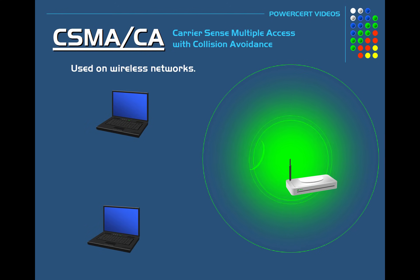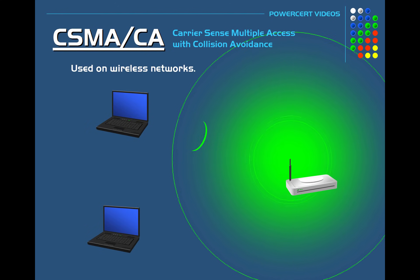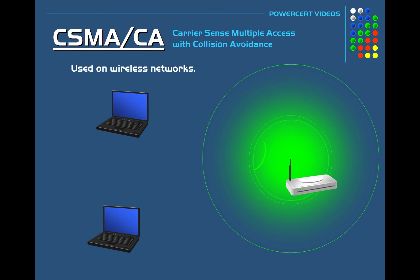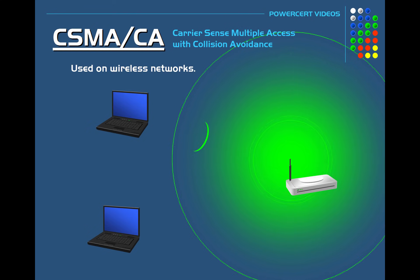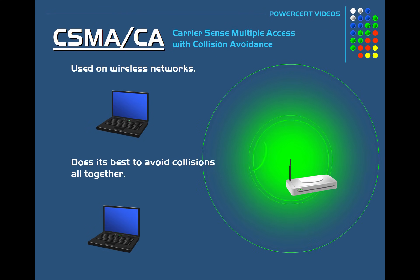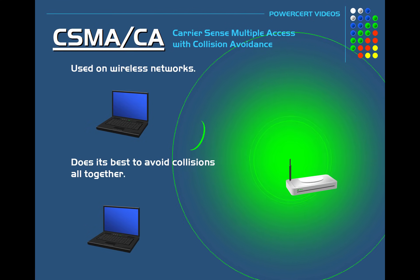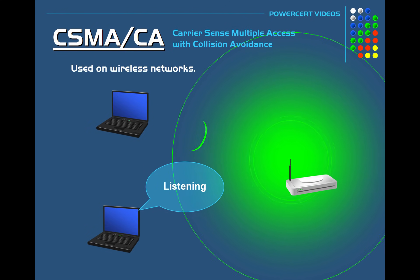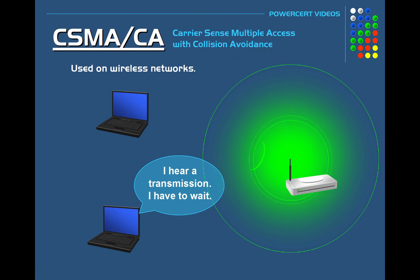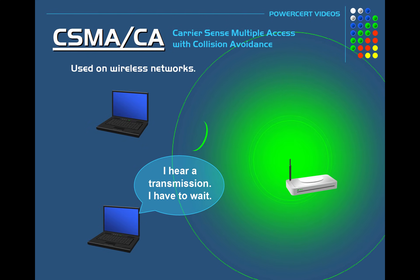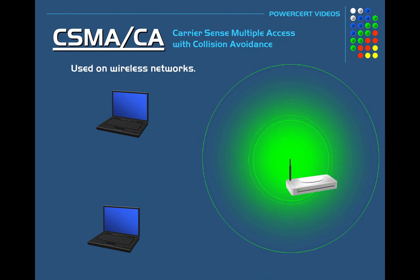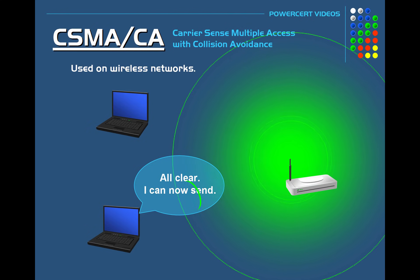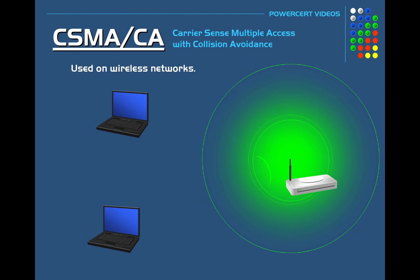Here is how CSMA-CA works. When a computer wants to send data on a wireless network, it really can't sense or hear if there are any collisions on the network because there's no cable involved, so instead it does its best to avoid collisions altogether. When a computer wants to send data, it'll first sense if there are any other transmissions happening. If it detects any, it'll wait a short amount of time before checking the channel again. When it checks the channel again and doesn't sense any transmission, it'll wait a short random amount of time and then go ahead and send its data.